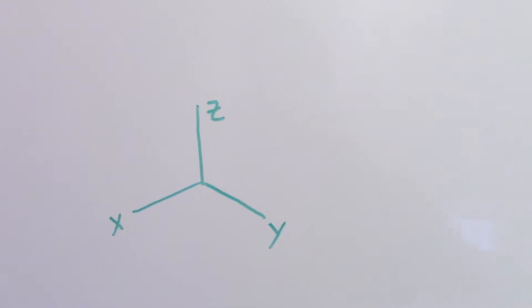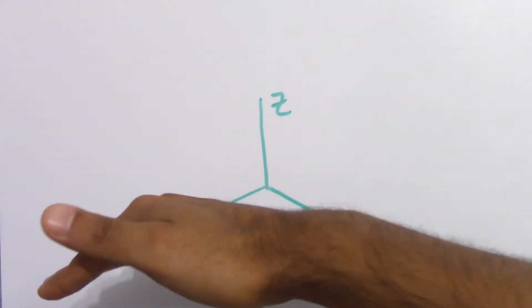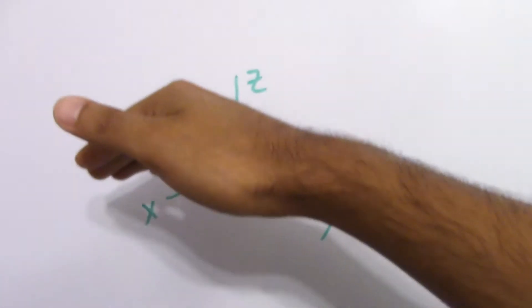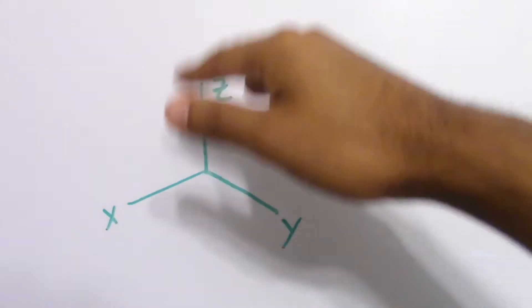Basically all you have to do is take your right hand, put it on the x-axis, which is the i. Remember we learned that i cross j gives you k, or the positive z-axis.